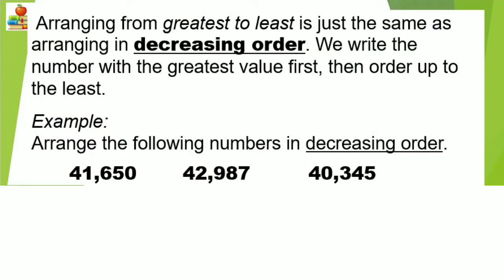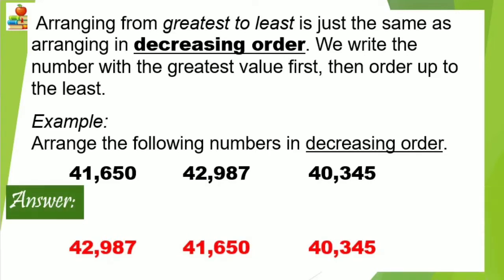Arranging from greatest to least is just the same as arranging in decreasing order. Rewrite the number with the greatest value first, then order up to the least. Look at the example: arrange the following numbers in decreasing order. 42,987 should be written first because it is the greatest number.